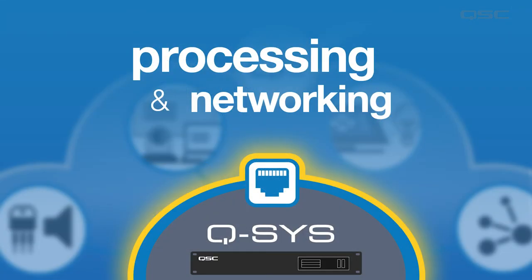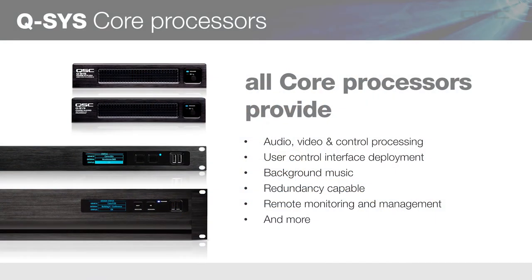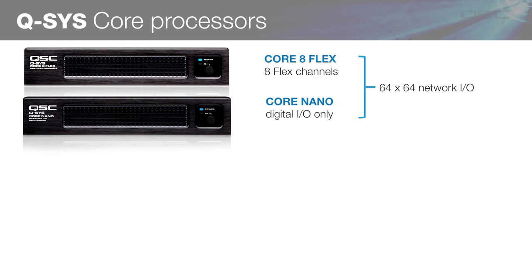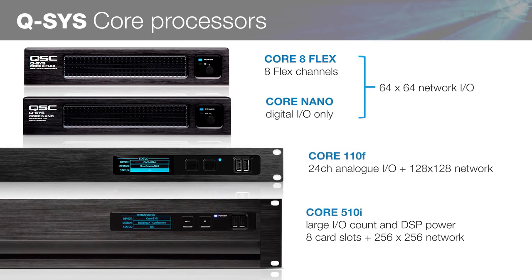The Q-SYS Core is the engine for the ecosystem. We have several options when it comes to core processors from small to large, based on channel count, processing power, and I/O options. The Core 8-Flex and Core Nano processors feature a 64x64 channel count, with the 8-Flex offering 8 flexible channels that can be configured as either inputs or outputs, or some of each. The Core 110F processor features 128x128 total network channels and a plethora of onboard I/O options. The Core 510i processor, with 256x256 channels, features 8 I/O card slots to be used with a variety of optional cards depending on your needs.